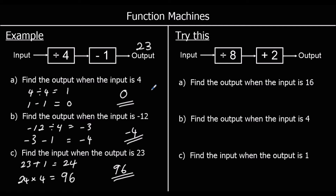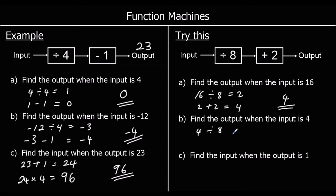One for you to try — give this one a go. Find the output when the input is 16: 16 divided by 8 is 2, and then plus 2 gives 4. Find the output when the input is 4: 4 divided by 8 is 4 over 8, which is the same as one half or 0.5. So 0.5 plus 2 is 2.5. So the output is 2.5.